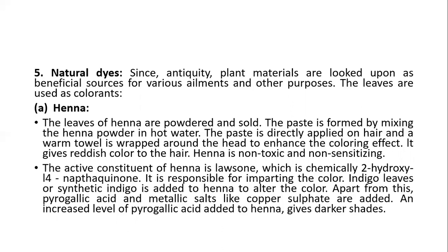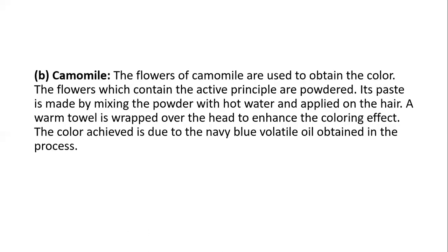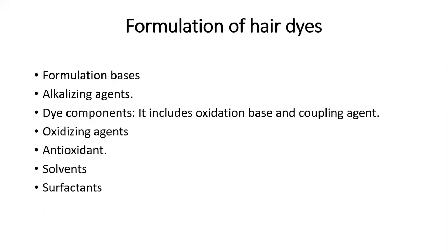Indigo leaves are another example; synthetic indigo is also added to henna to alter the color. Pyrogallic acid and metallic salts like copper sulfate are added, and an increased level of pyrogallic acid in henna gives darker shades. Chamomile is another example — flowers of chamomile are used to obtain color; the active principle of chamomile is powdered and made into a paste similarly to henna by mixing with hot water. The color achieved is due to the volatile oil present in chamomile.